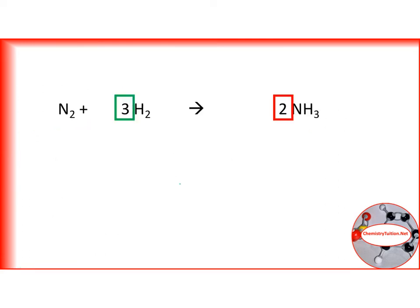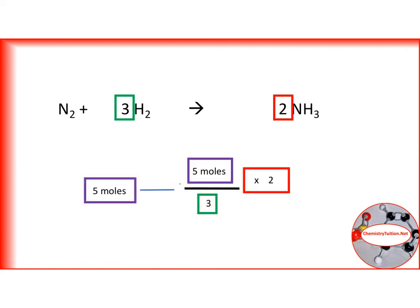So here's a little summary for you in terms of working with more complicated ratios. When you do have that, you find out how many moles you're starting with. You divide it by the number in front of it and you times by the number that you are going to.